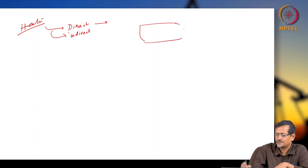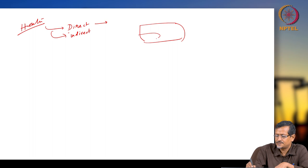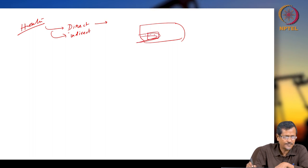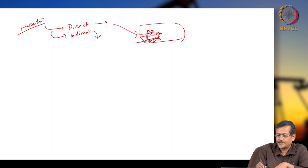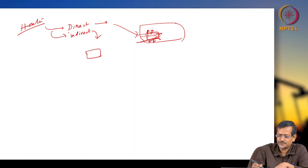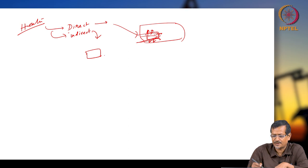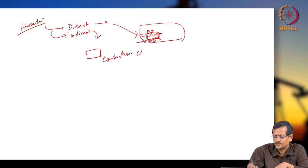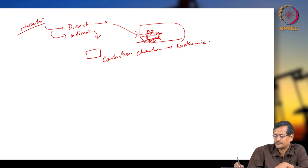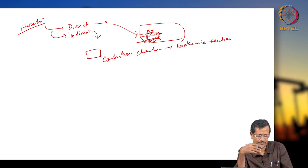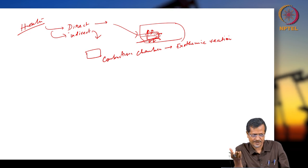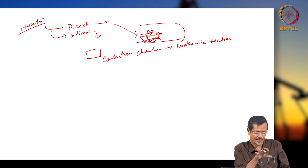In a direct heater, combustion happens inside the system in a closed vessel and heat goes directly to your fluid. In an indirect heater, you have a separate combustion chamber where the exothermic reaction occurs — exothermic means heat is released, as when burning petrol, diesel, or wood.